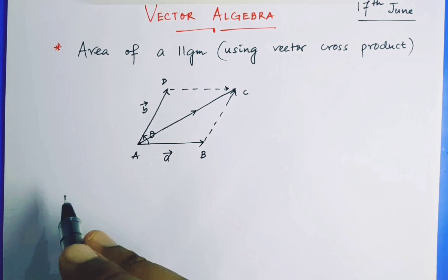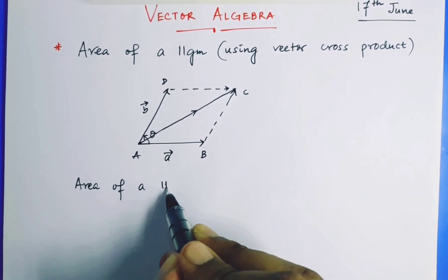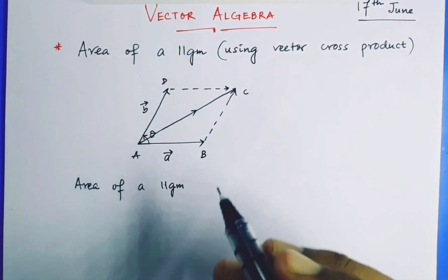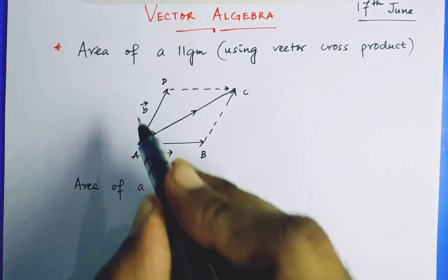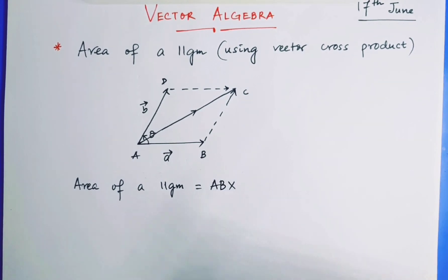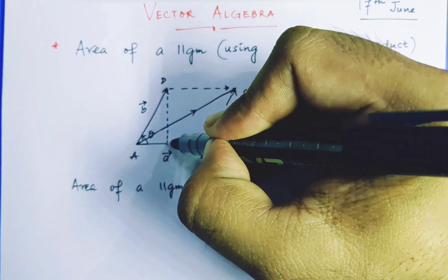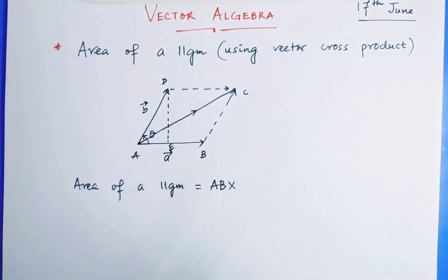Now, can you tell me what is the area of any parallelogram? Area of a parallelogram, forget about the vectors. It is given by AB into the perpendicular we drop at point E. So AB into DE gives you the area of the parallelogram. So now let's find out those things.